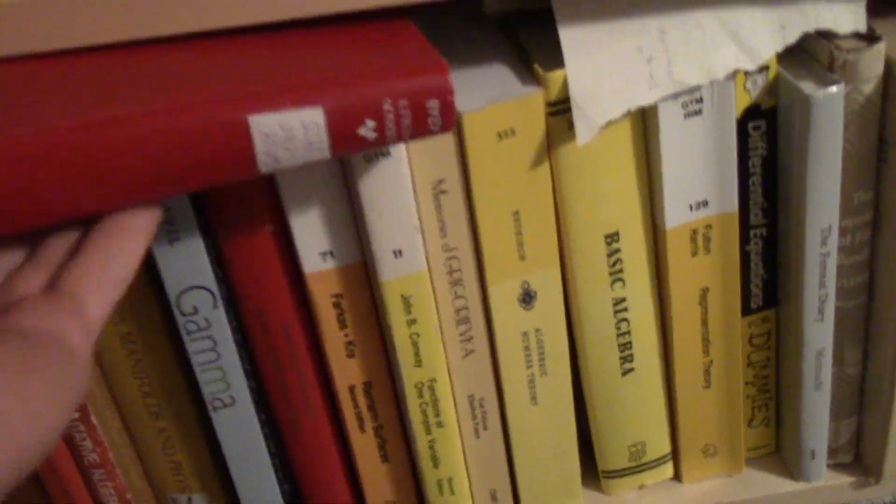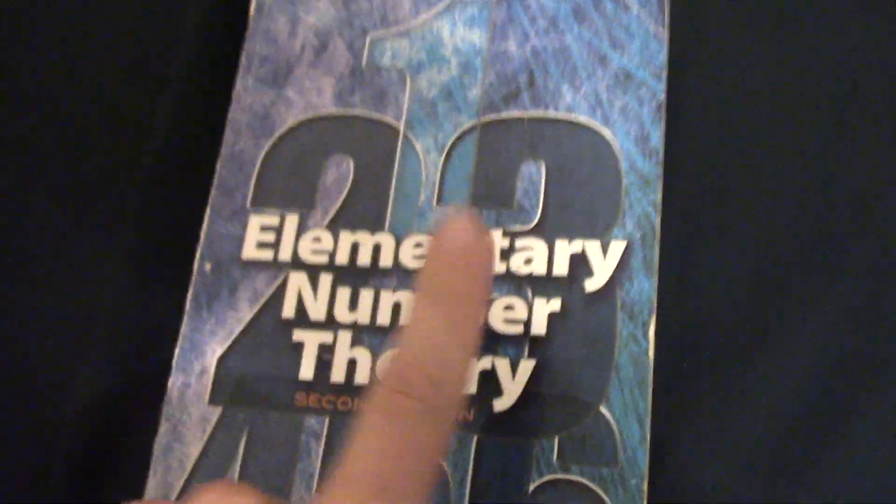Let's jump into another underrated classic: Elementary Number Theory by Underwood Dudley. I think one of the most underrated books, at least if you're looking to learn elementary number theory. Why is this book underrated? Number one, the price.